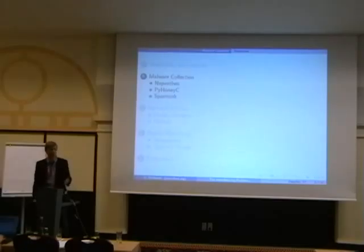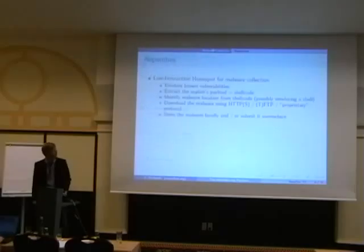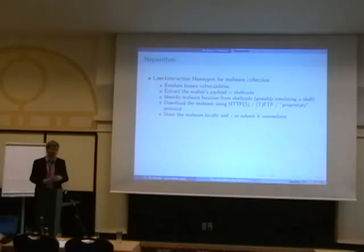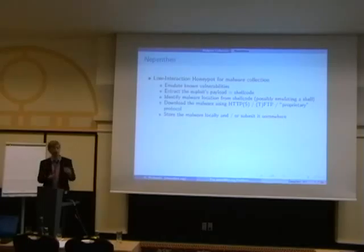The first step is malware collection and there are several tools to do this. First of all, there's Nepenthes, a low interaction honeypot, which works by emulating the known vulnerability. For example, we have the LSASS exploit. There's some public exploits for it and we just look at the source of these exploits or the information about the vulnerabilities and write some module to emulate these vulnerabilities. Then we of course are going to get some exploit from the malware with a payload like a shellcode. We analyze the shellcode and then just download the malware from the infecting host via HTTP, TFTP, whatever the malware uses to propagate. And then we just store it on the hard disk or submit it into the database or whatever.